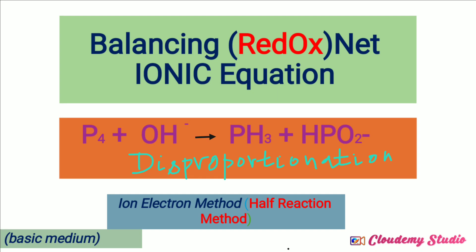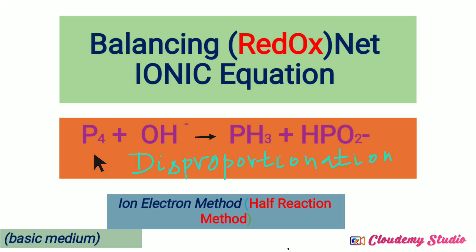Let's balance one more redox reaction — the redox net ionic equation. This reaction is between phosphorus and hydroxide ion, forming phosphine and hydrogen phosphite ion. This redox reaction is a special kind of reaction where the same substance is both oxidized and reduced, so we call this a disproportionation reaction. This reaction takes place in basic medium.